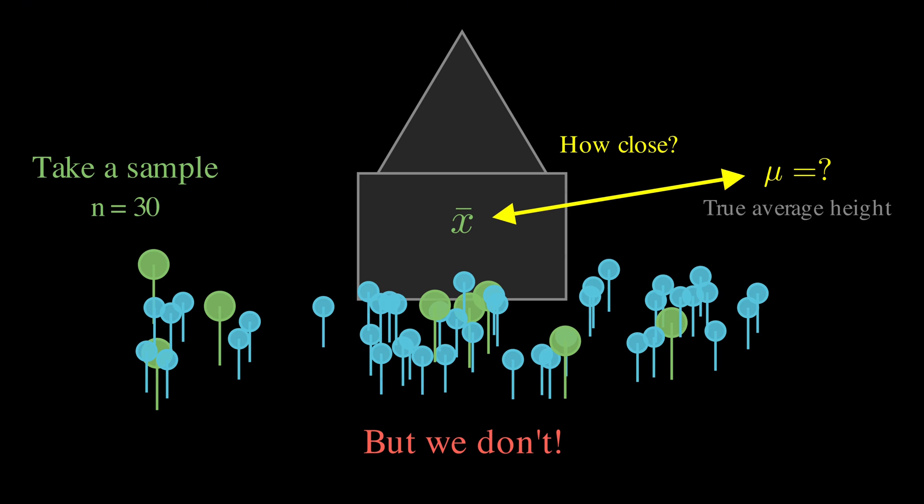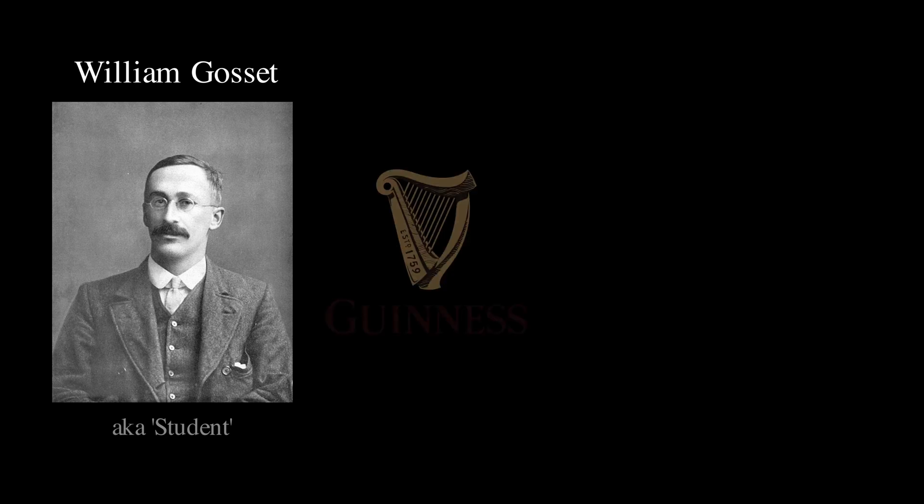We almost never know the true population standard deviation and instead we have to estimate it from our sample, using what we call the sample standard deviation or S. And this is where William Gossett, who published under the name Student while working at Guinness Brewery, realized we had a problem.